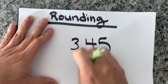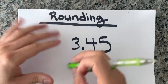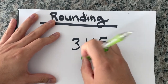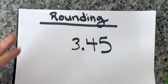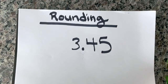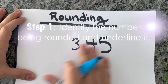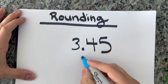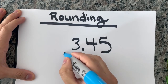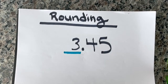So now that we understand, we're going to round this to the nearest whole number. Let's do step one. Your step one is to identify the number being rounded and underline that number. So we know we're rounding to the nearest whole number, and Decimal Man told us this is the whole number. So let's underline it. Bam — that's step one, done.